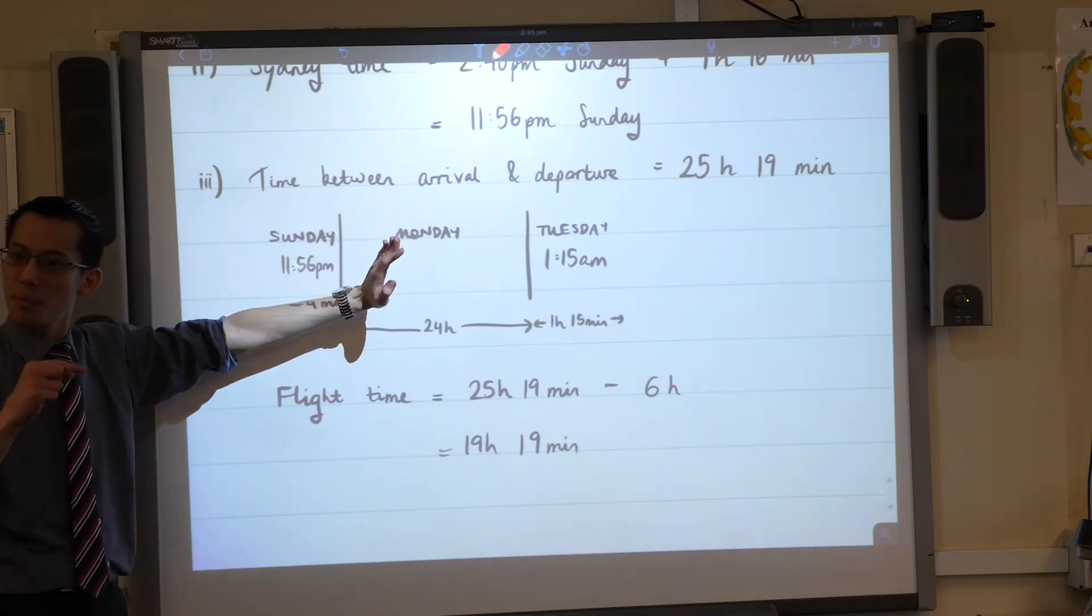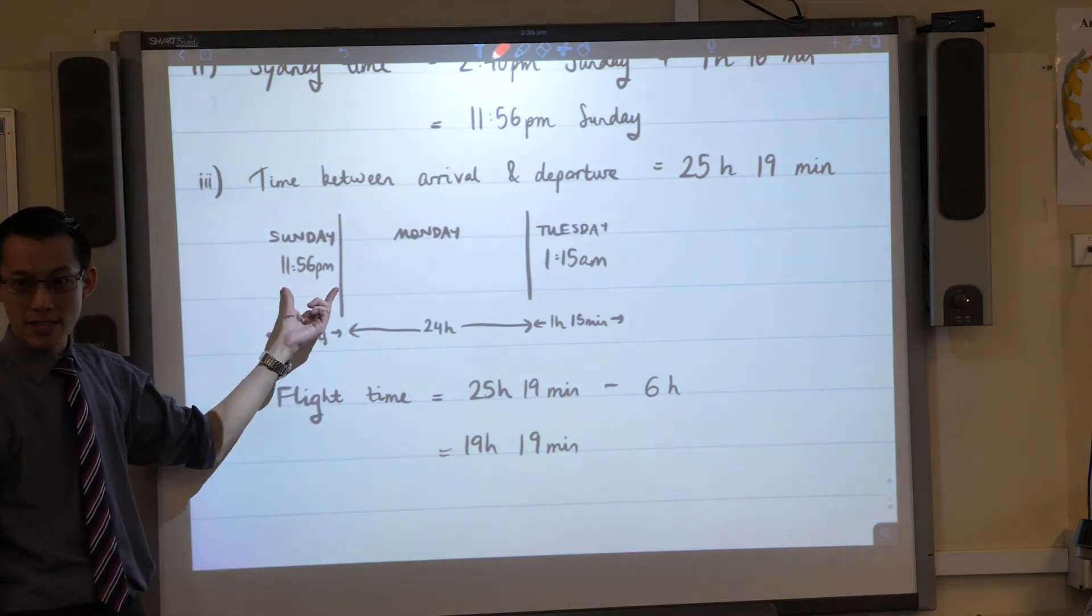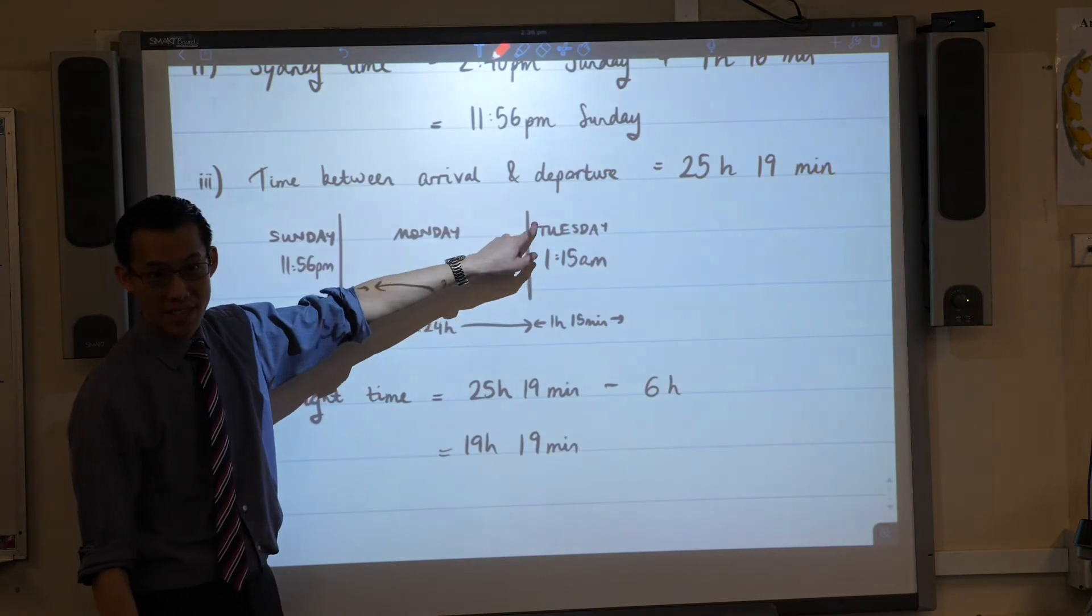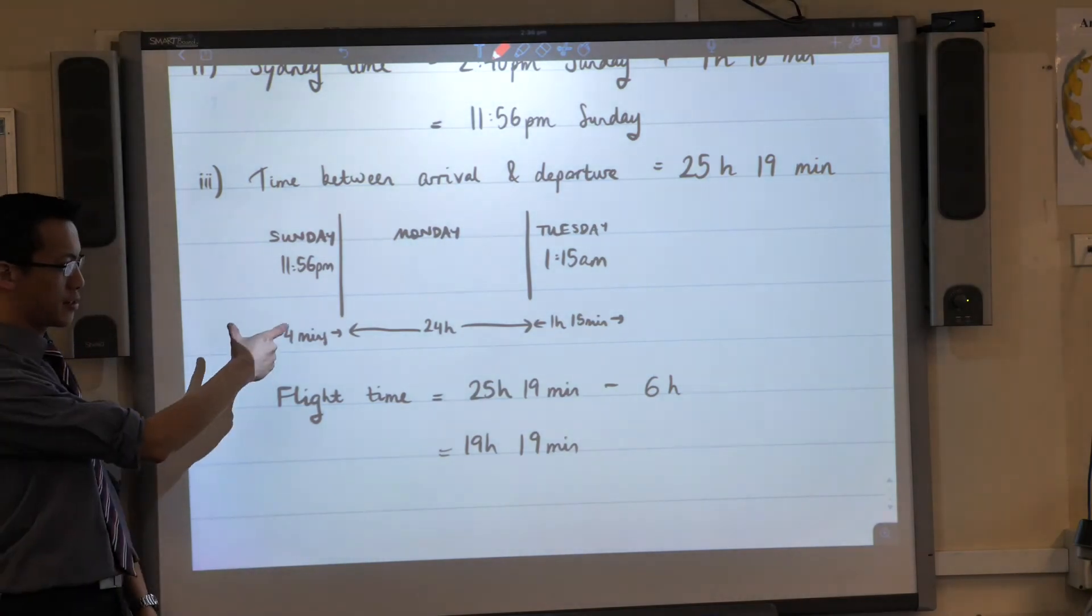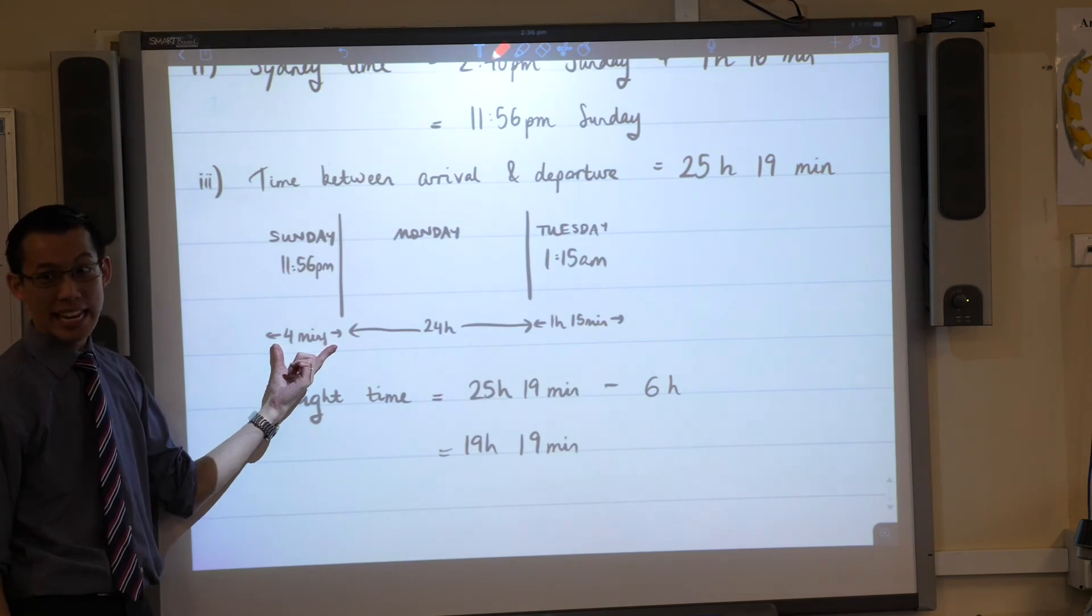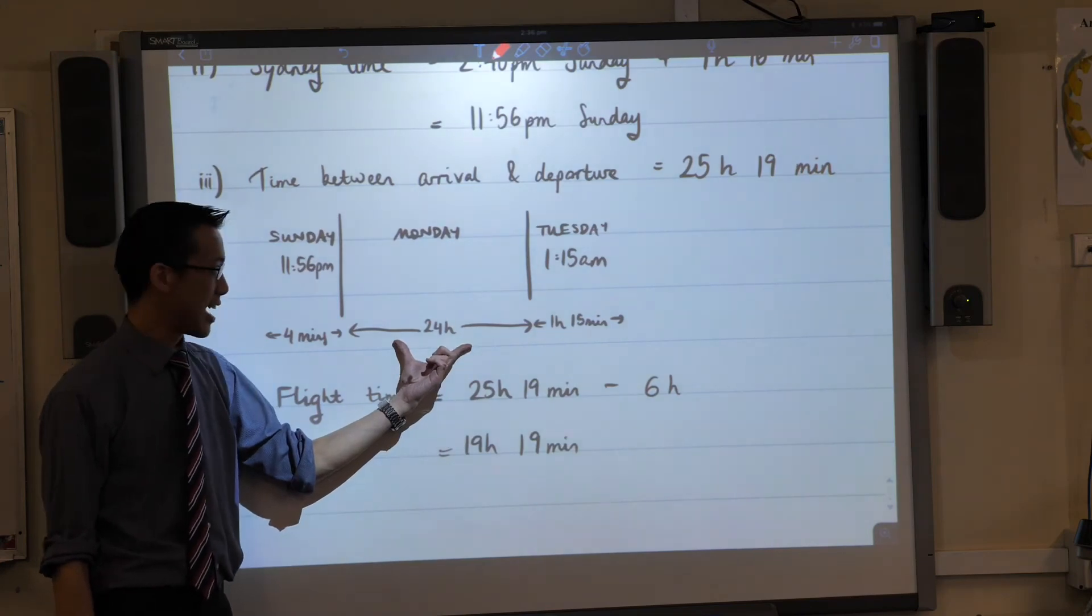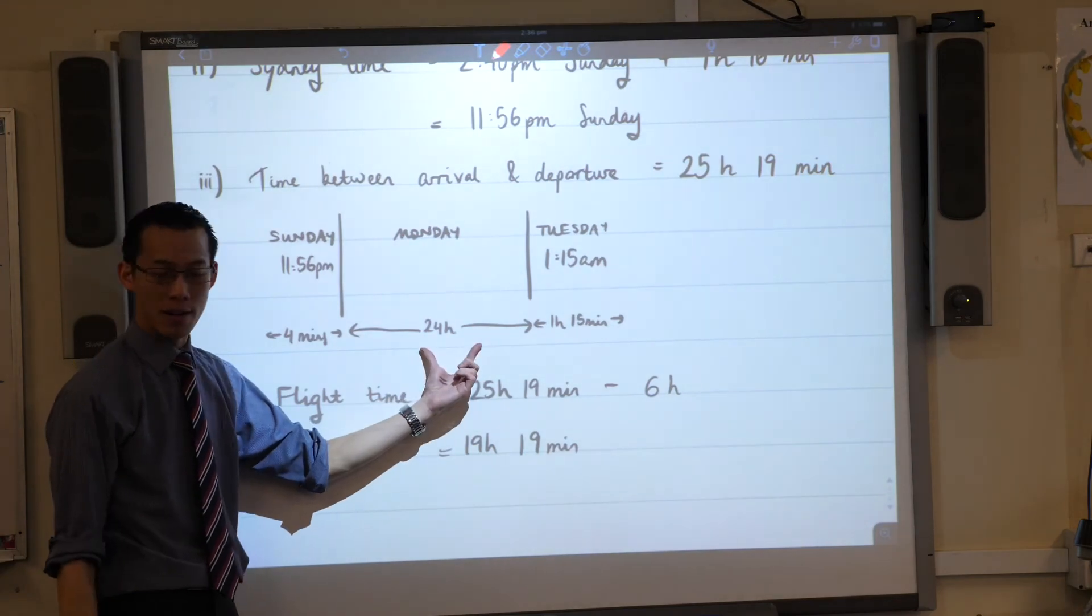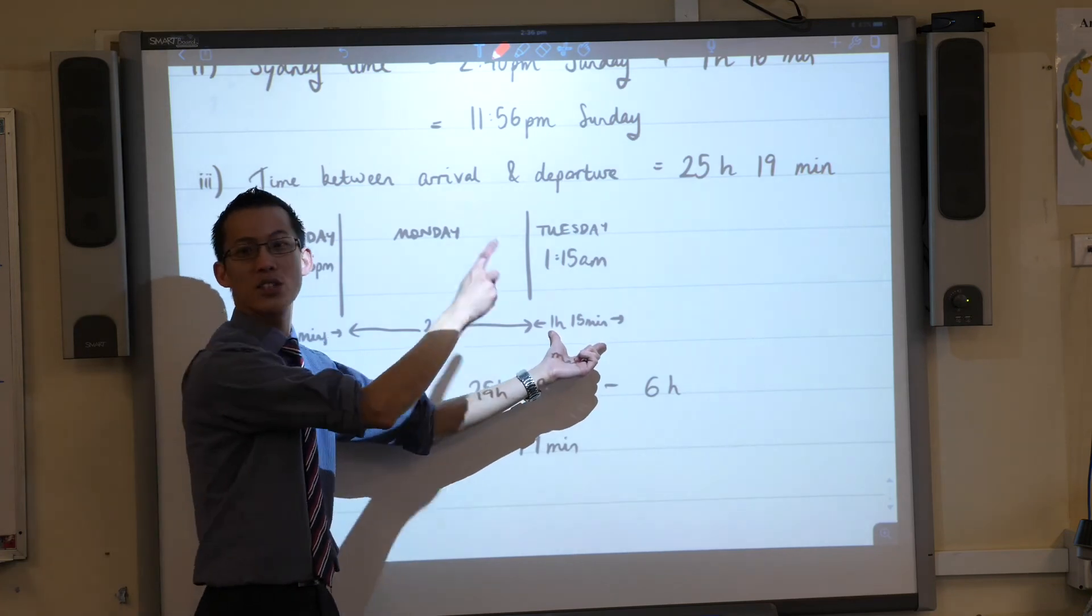In terms of Sydney time, because that's what part two just did, I'm leaving Rome at this time on this day and arriving at this time on this day. There's Sunday, then Monday, then Tuesday. So what I've worked out is for each of those three days, how many minutes and hours are there. It only takes four minutes to get out of Sunday because you're at 11:56 PM. The entirety of Monday is included in this departure arrival time. So I've put down 24 hours, and then on Tuesday morning, 1:15 AM, so one hour and 15 minutes have passed on that day.